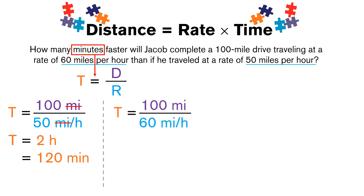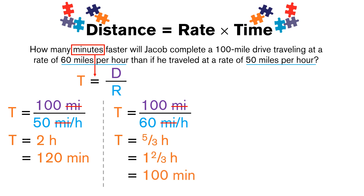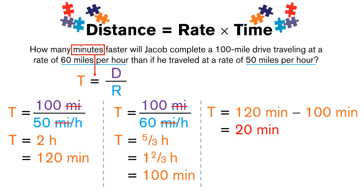For 60 miles per hour: 100 divided by 60 simplifies to 5/3, which is 1 and 2/3 hours as a mixed number. Converting, 1 hour is 60 minutes, and 2/3 of an hour is 40 minutes, giving 100 minutes total. Now that both are in the same units, we subtract: 120 minus 100 equals 20 minutes. So Jacob completes the drive 20 minutes faster at 60 mph.